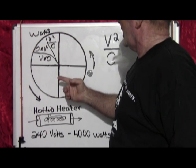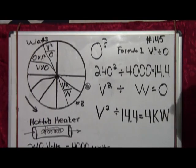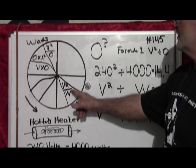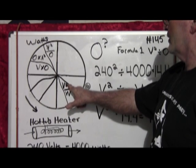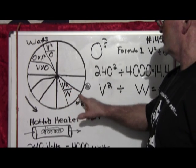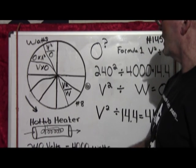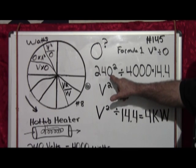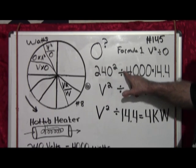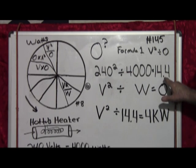Because with any two factors on this pie chart, you can figure for all four factors: watts, amps, volts, or ohms. So we're going to borrow from the ohms section, actually number 8, volts squared divided by watts will give you ohms. We've got volts and we've got watts. So you take 240 volts and square it, divide that by 4,000 watts, you get 14.4 ohms.